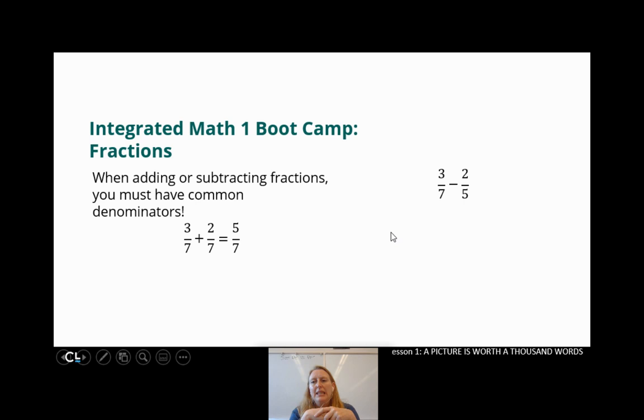So when you come across a problem like this, we have a little issue, right? Three sevenths minus two fifths. They're not common denominators. I can't add or subtract them until my denominators match. So fine. I'm going to make them match. These guys don't have a lot in common, five and seven. So I need to make the denominator 35 because 35 is a number that both five and seven will go into. 35 is our least common denominator for these guys.